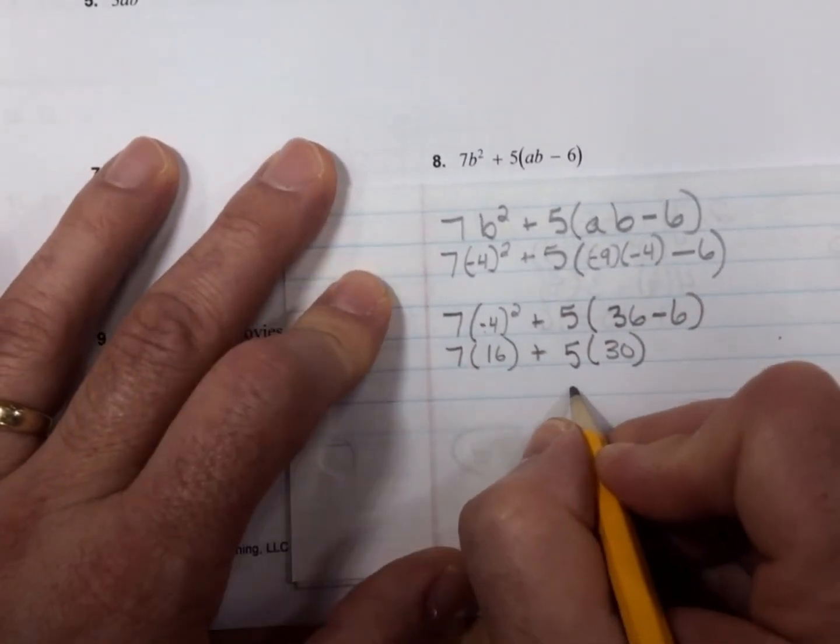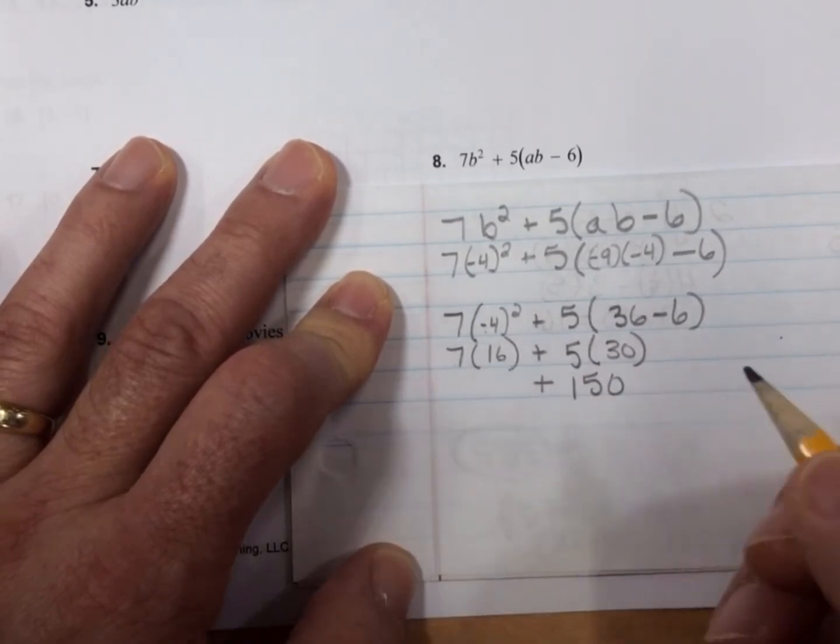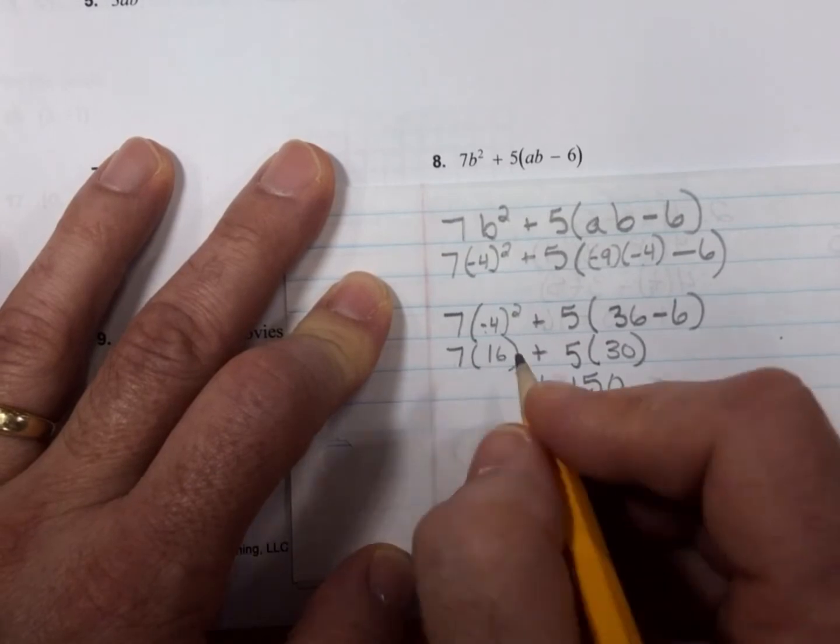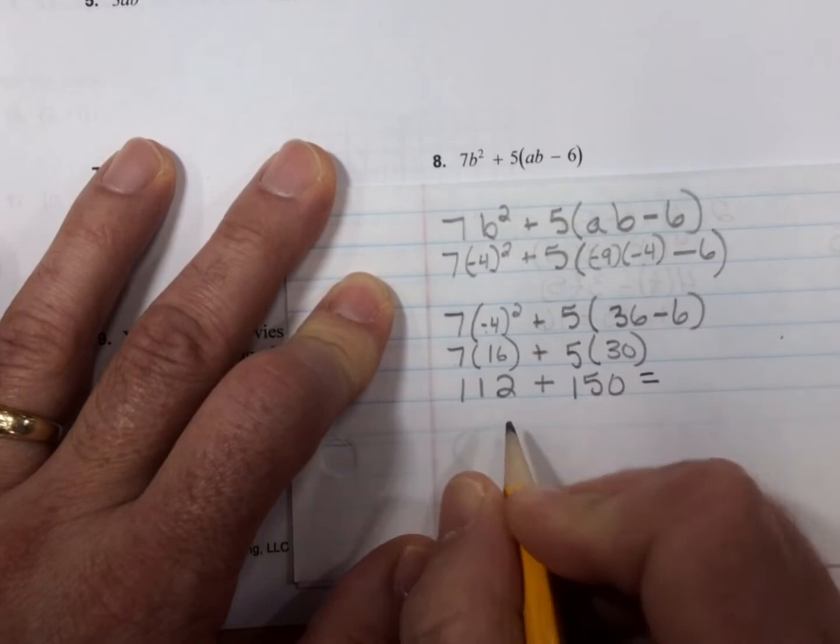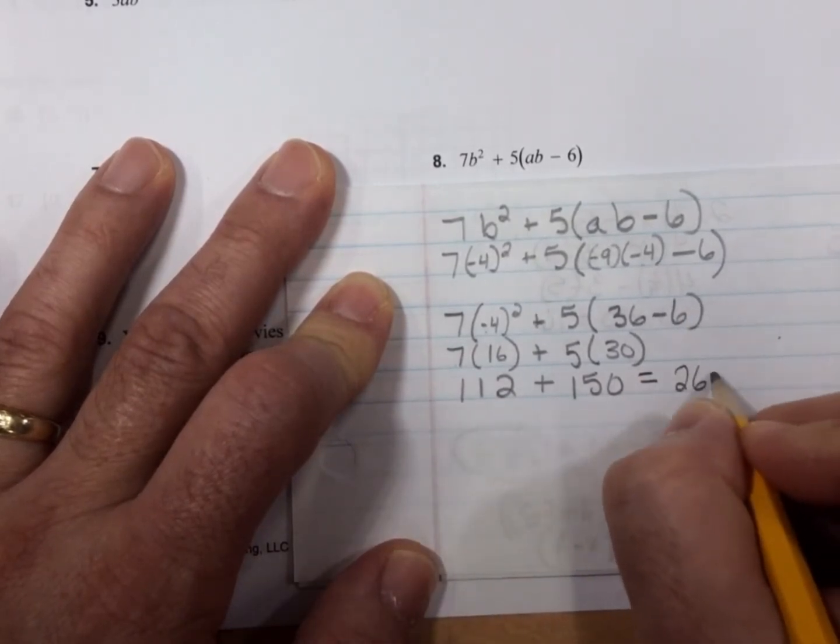5 times 30 is 150. 7 times 16 would be 70 and 42, 112. 112 plus 150 is 262.